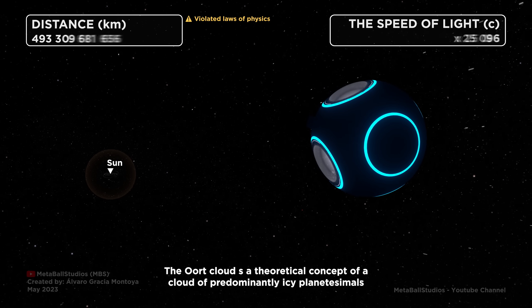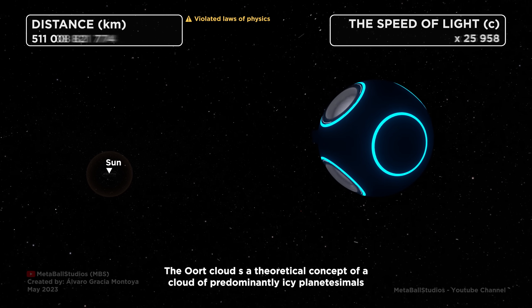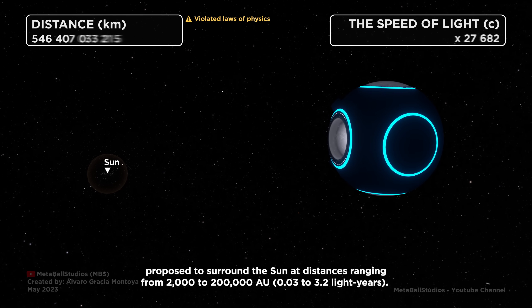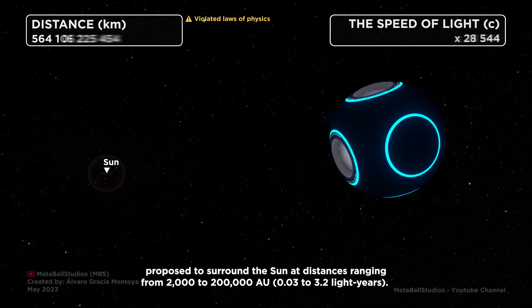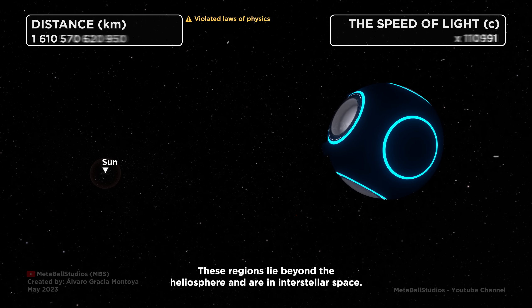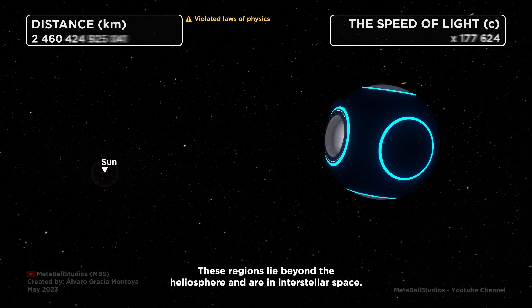The Oort cloud is a theoretical concept of a cloud of predominantly icy planetesimals proposed to surround the Sun at distances ranging from 2,000 to 200,000 AU. These regions lie beyond the heliosphere and are in interstellar space.